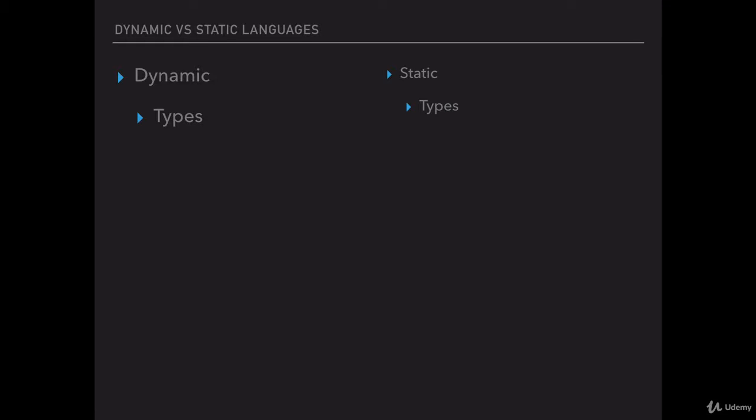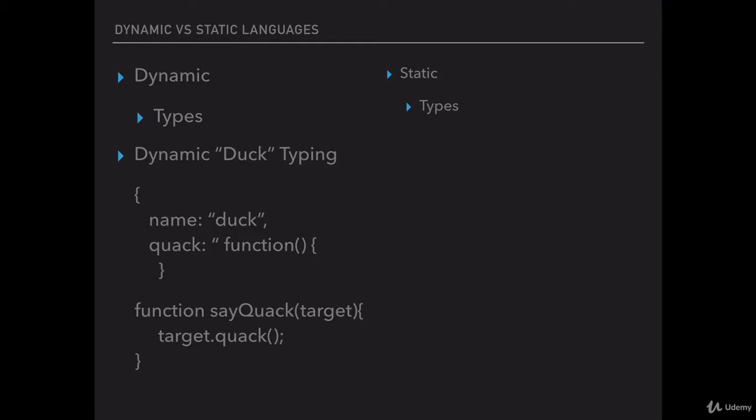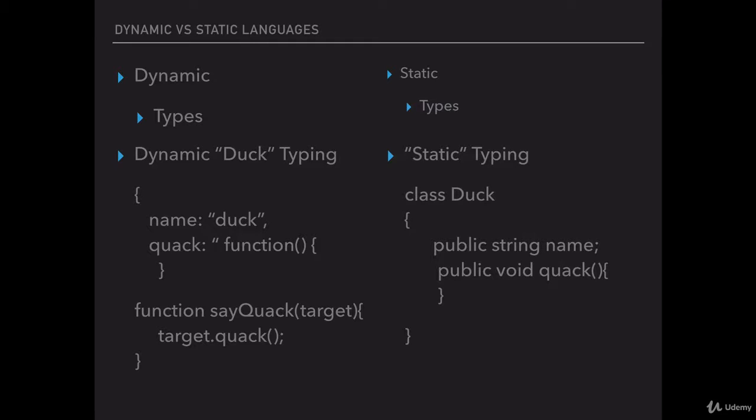Duck typing refers to the idea that if it looks like a duck, walks like a duck, quacks like a duck, well, it must be a duck. In other words, if my code expects an object that has a method called quack on it, and I get an object that has a method named quack, that sounds good. I don't need to validate anything else about that object.